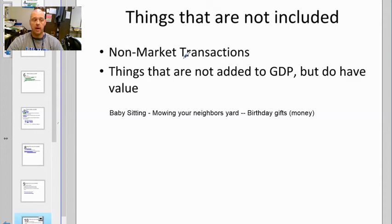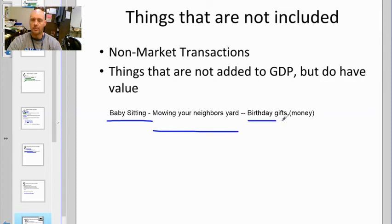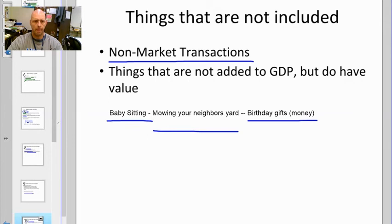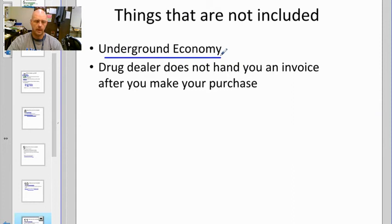Non-market transactions are things that happen but there's no real way to track them. For example, getting paid $10 to babysit a neighbor's kid, $20 to mow a neighbor's yard, or receiving money in a birthday card — you don't fill out a government form saying you made $10 from Aunt B. Those are non-market transactions; they're economic but won't be tracked or valued in GDP. Similarly, the underground economy — illegal transactions — won't be invoiced or reported.